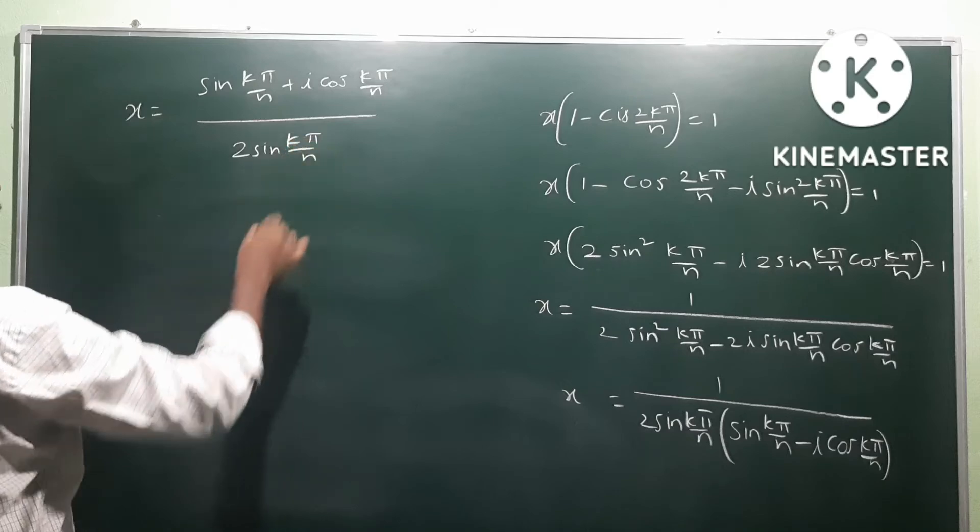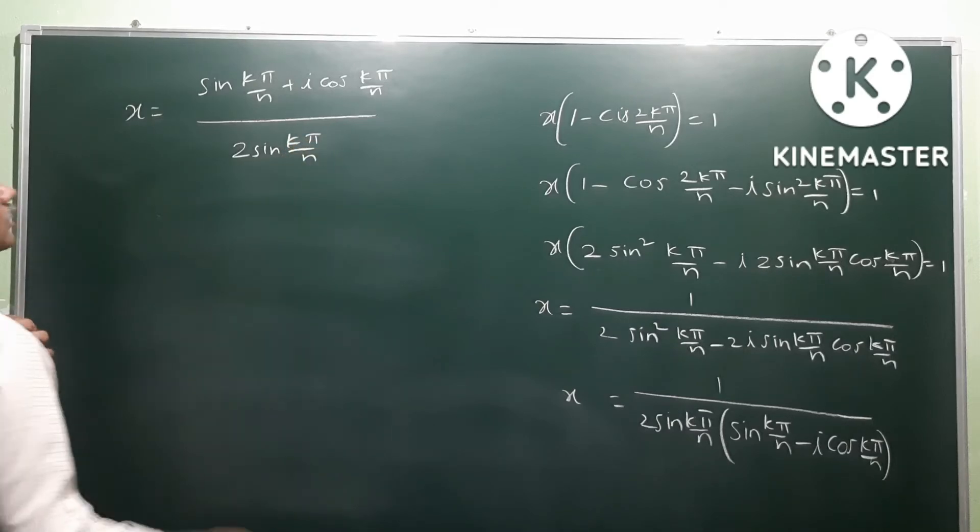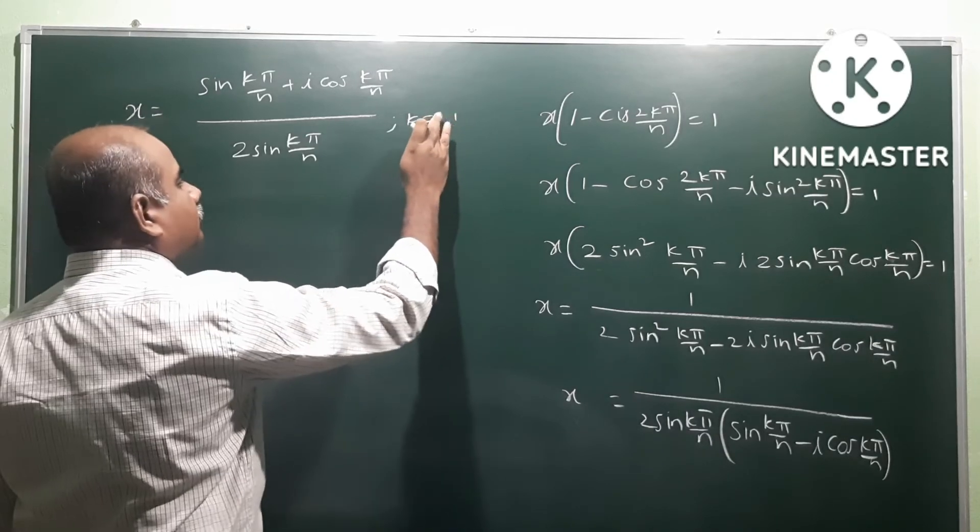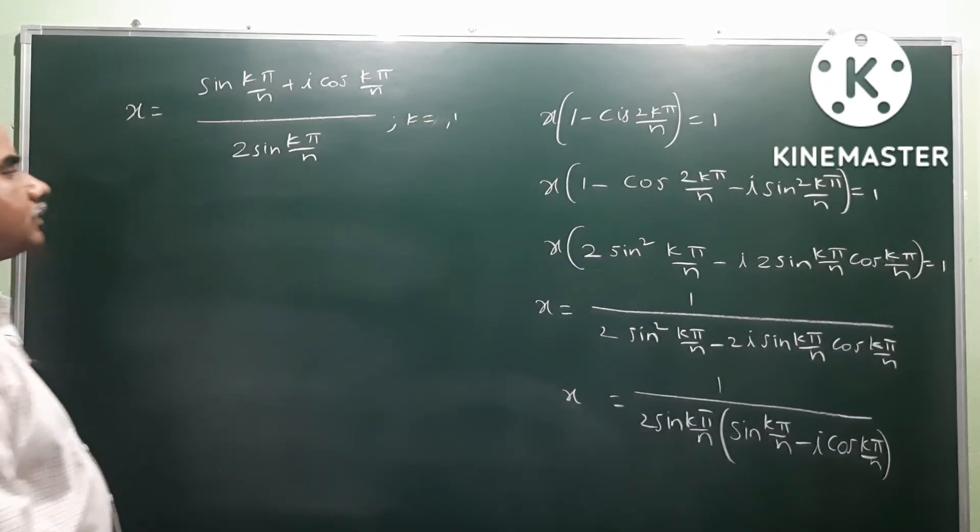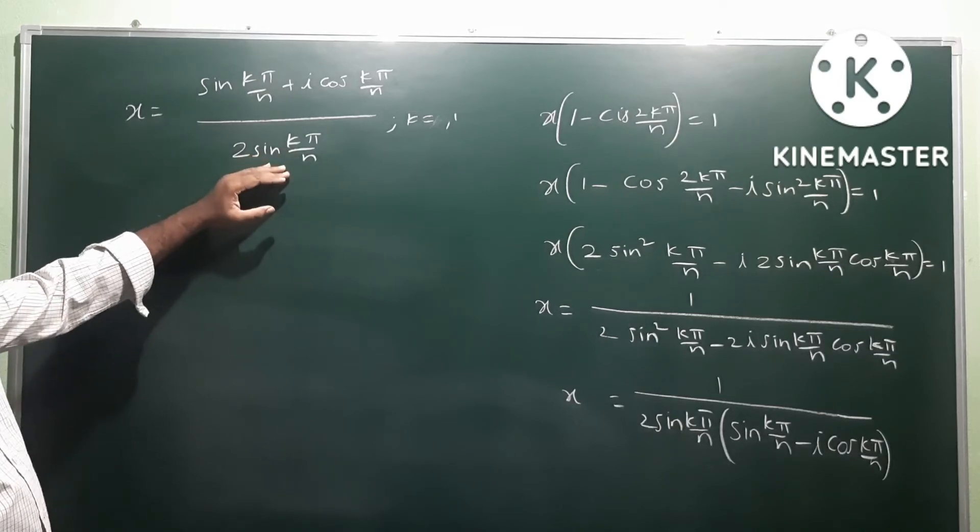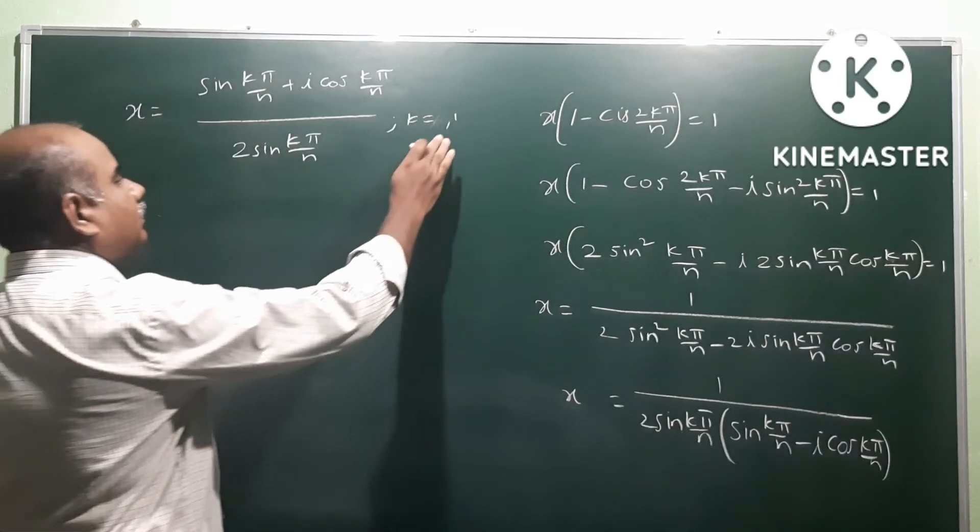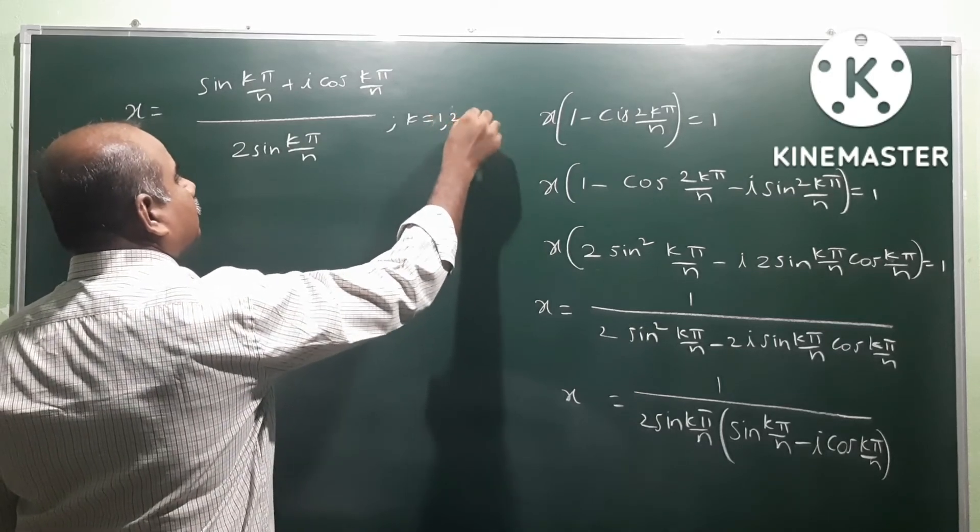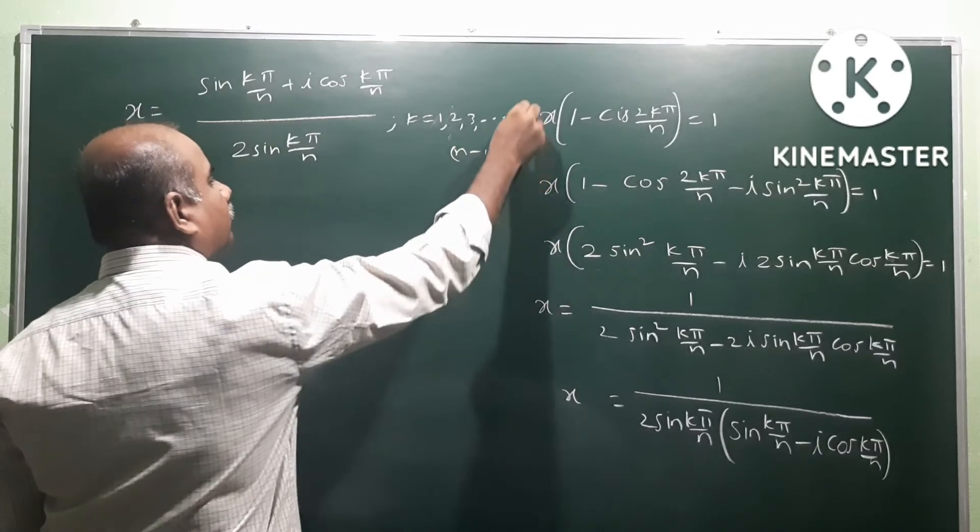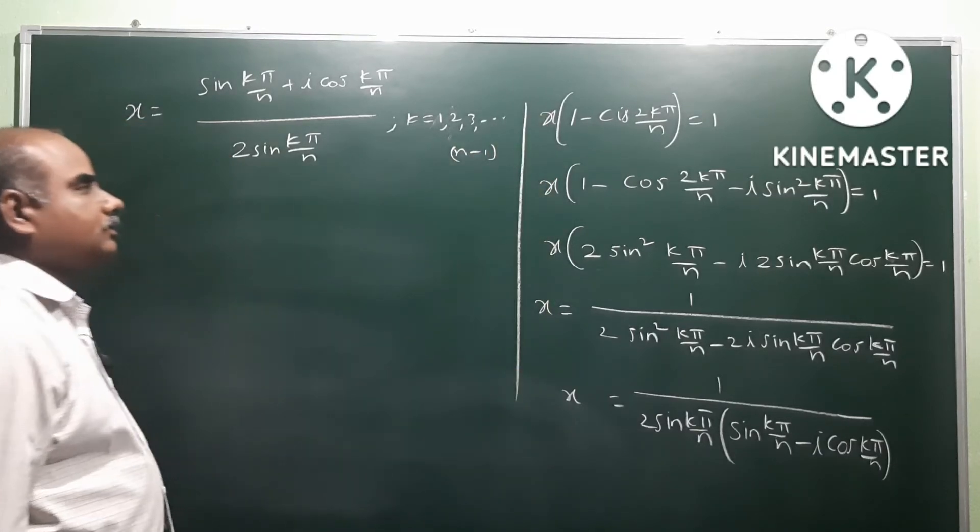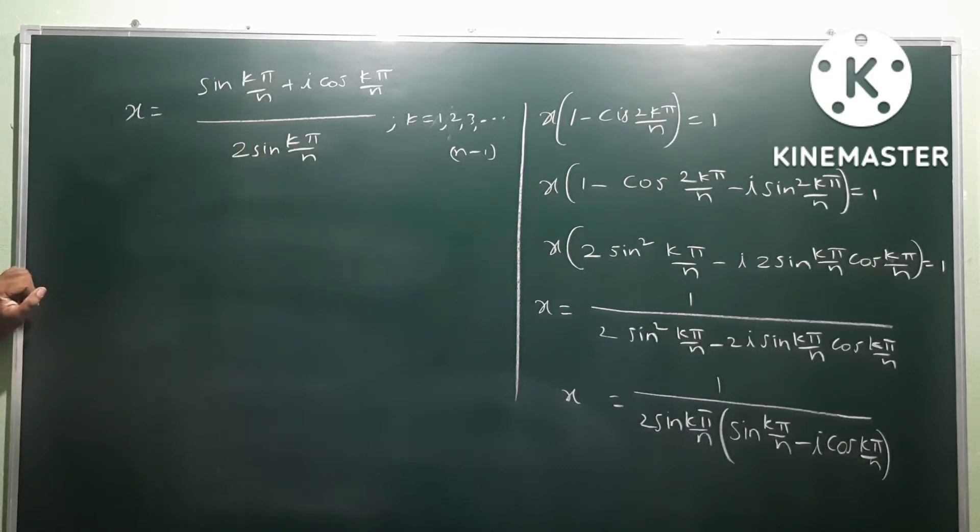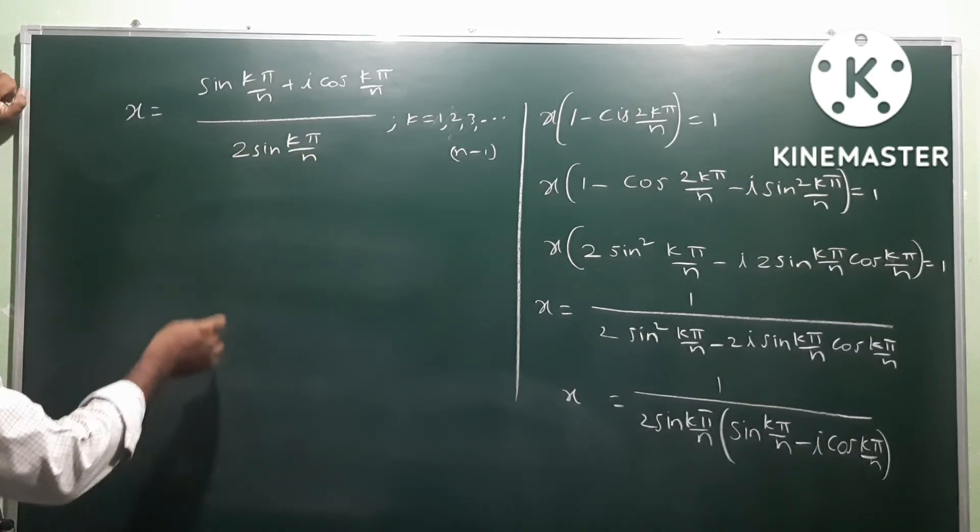Where k equals... sorry, not 0, because if k is 0, then sin(0) equals 0, so the denominator becomes 0, giving infinity. So we cannot take 0. Therefore k equals 1, 2, 3, and so on up to n-1.